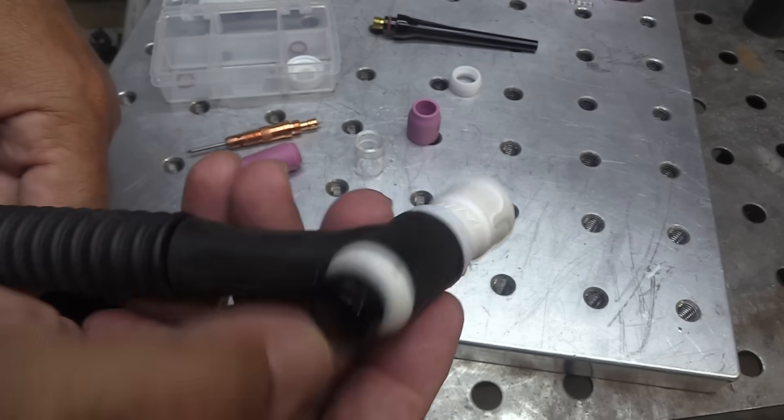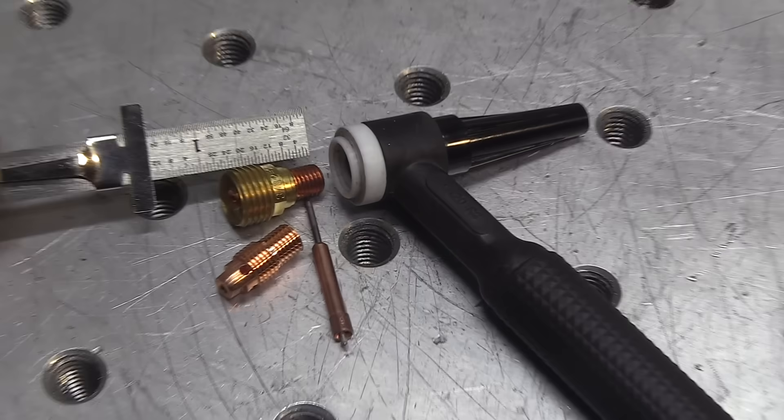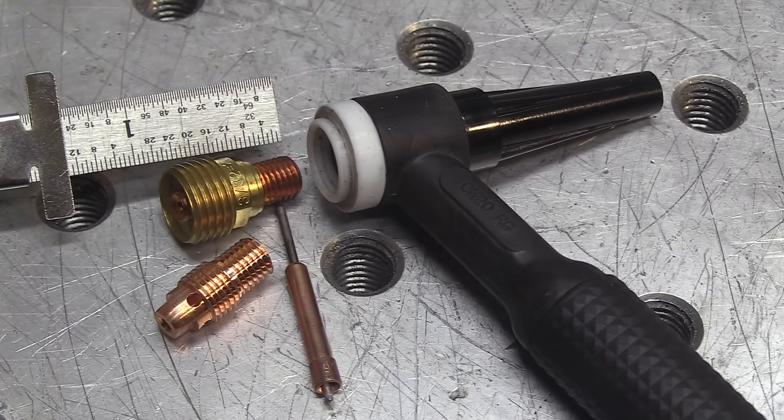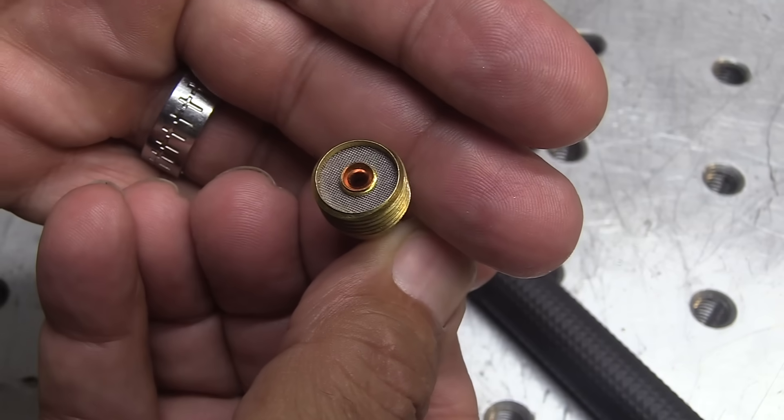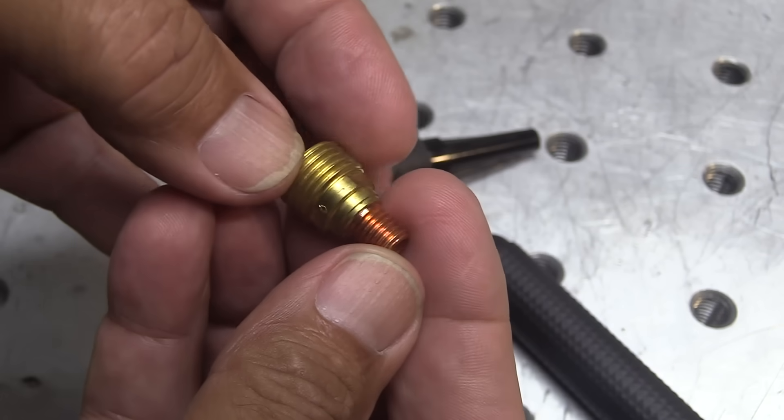The clear cup here also works with the hardware with this 8 combo kit. It just comes with a collet body with an o-ring groove on it. You see both cups work on that particular collet body.